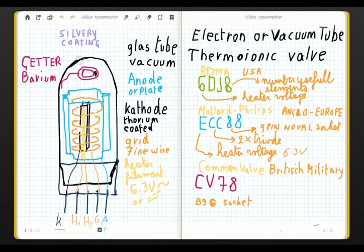If there is leakage in the tube from air, this barium will get oxidized and will get a white color and this will indicate a bad lamp.